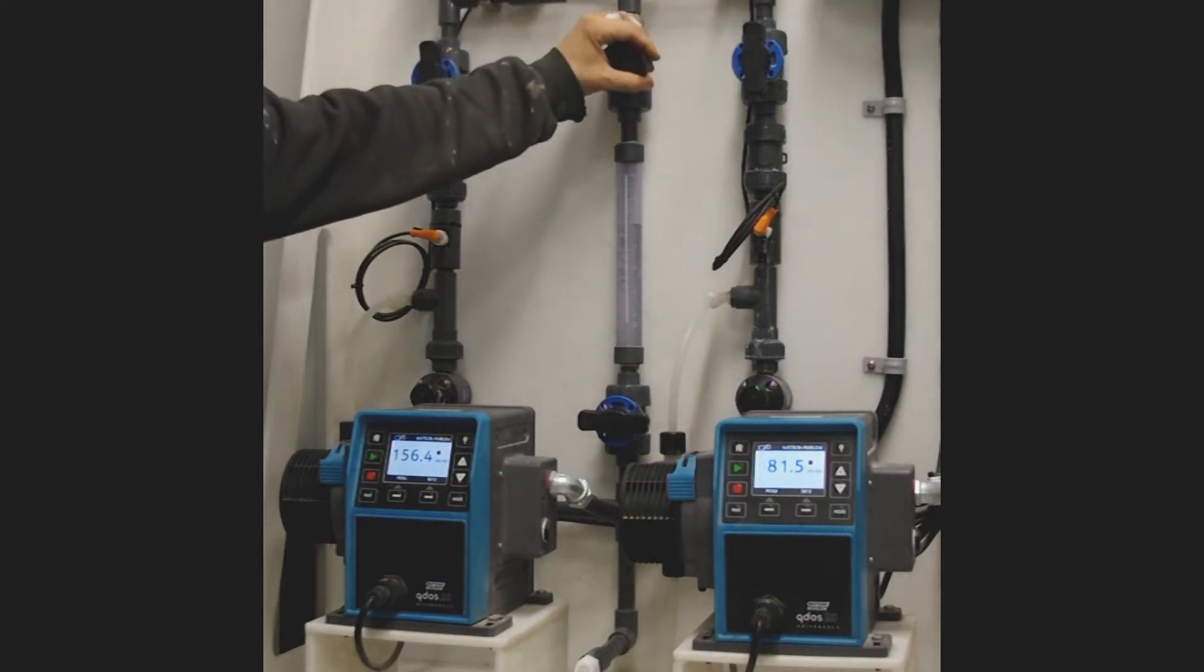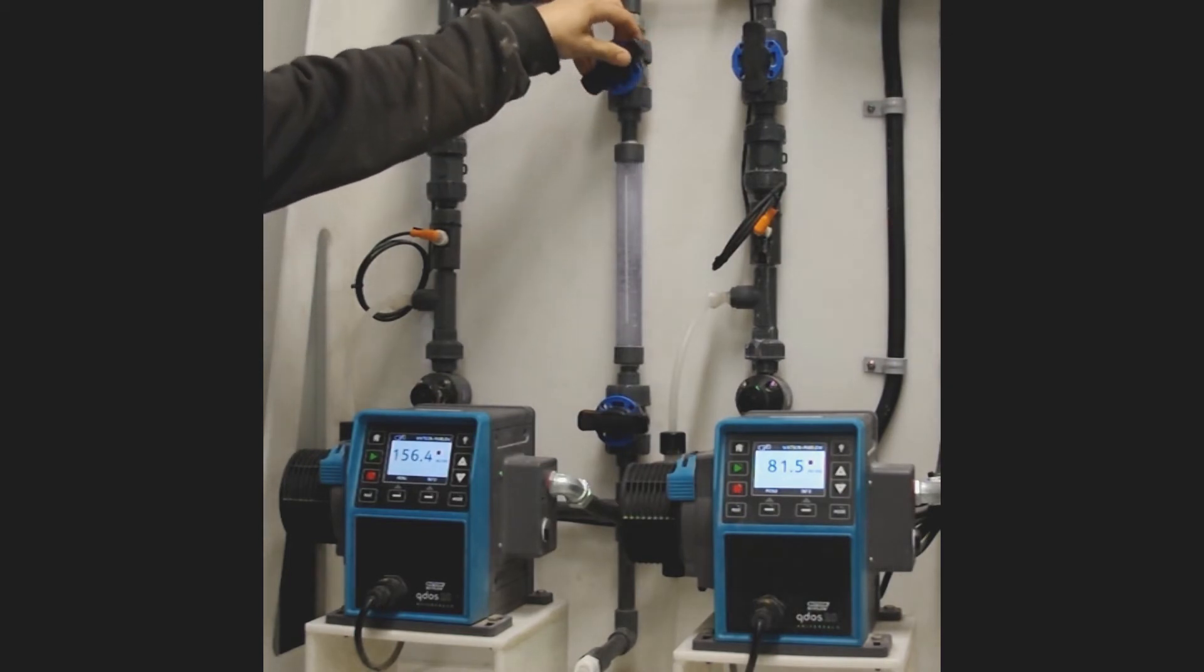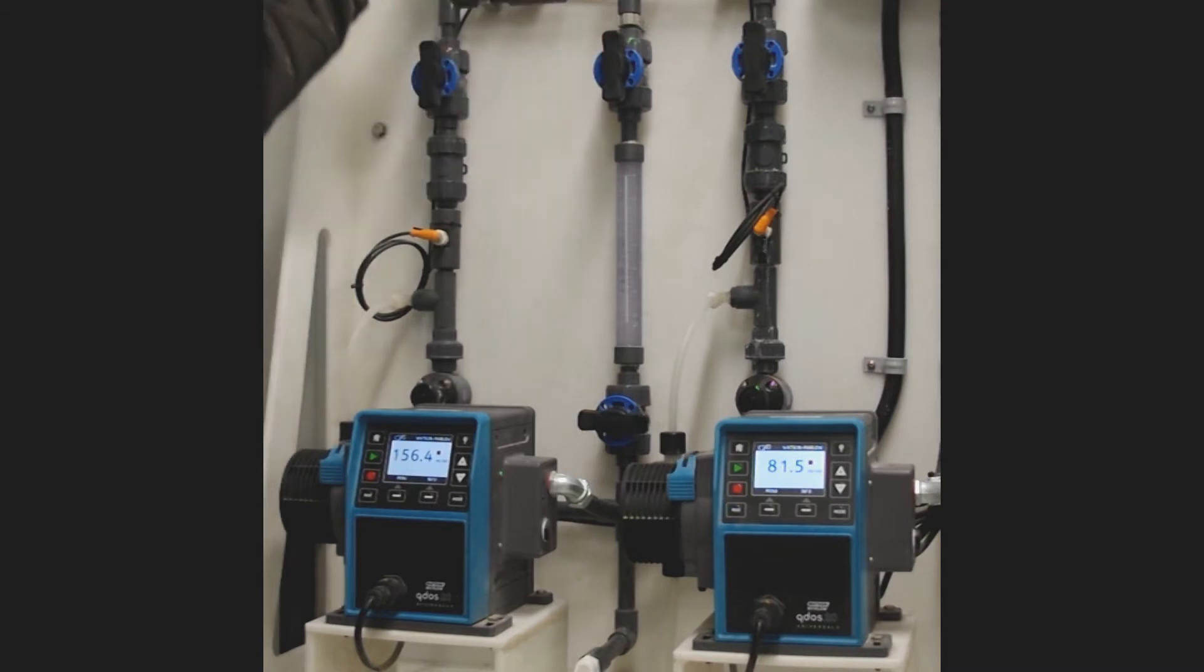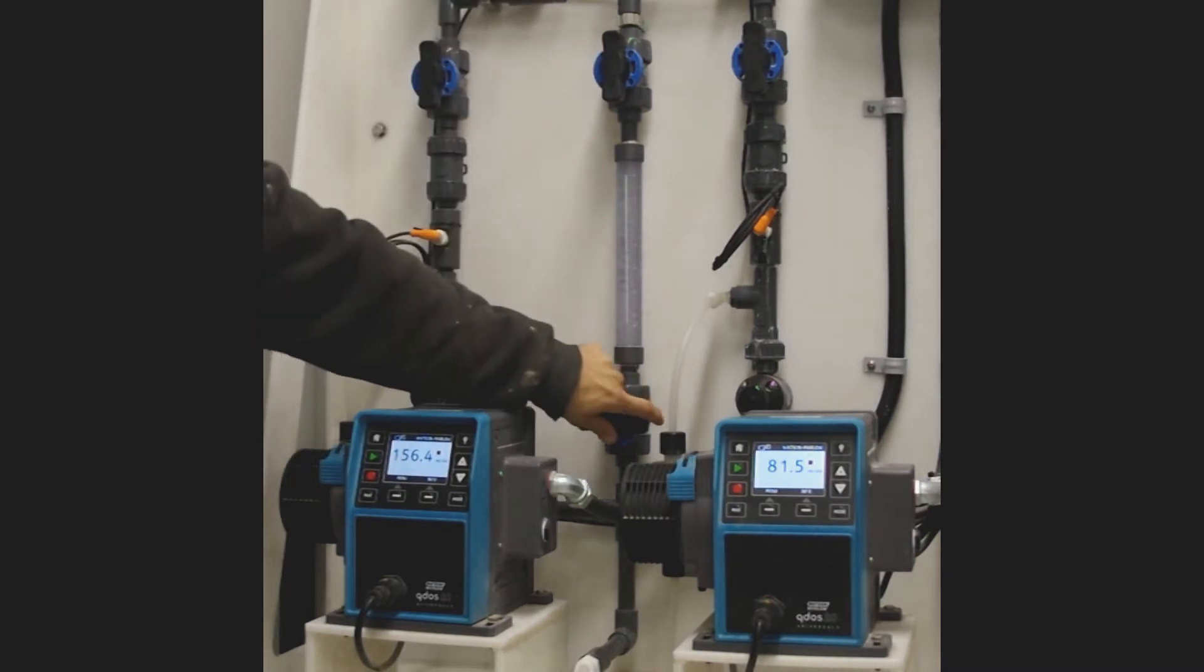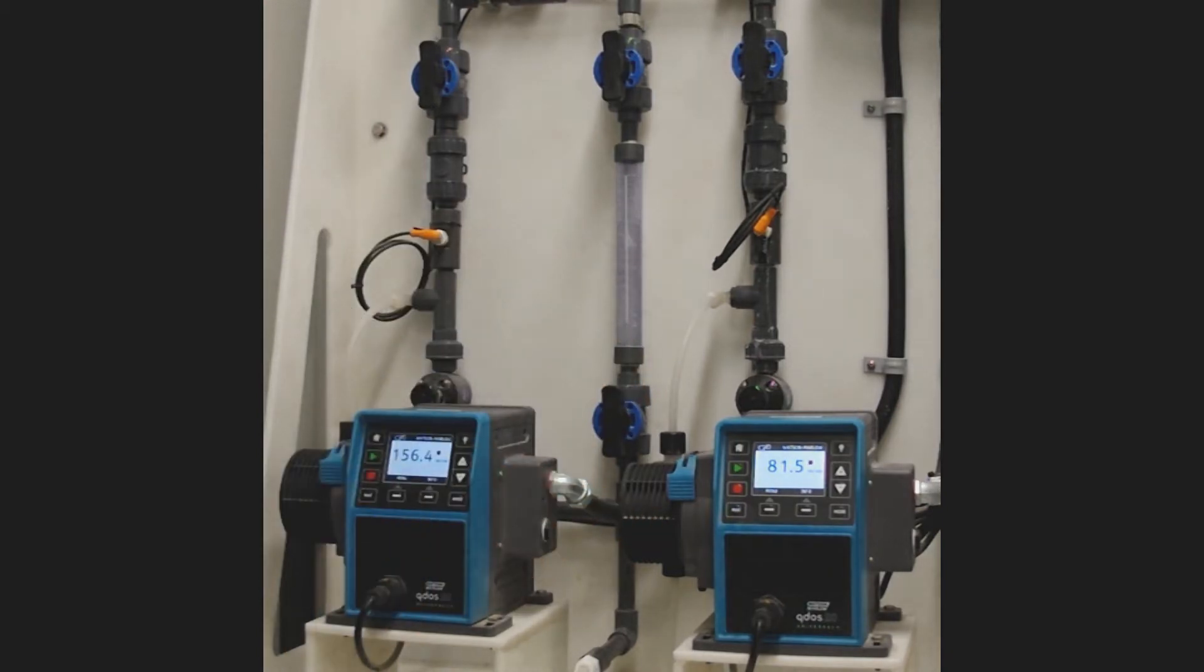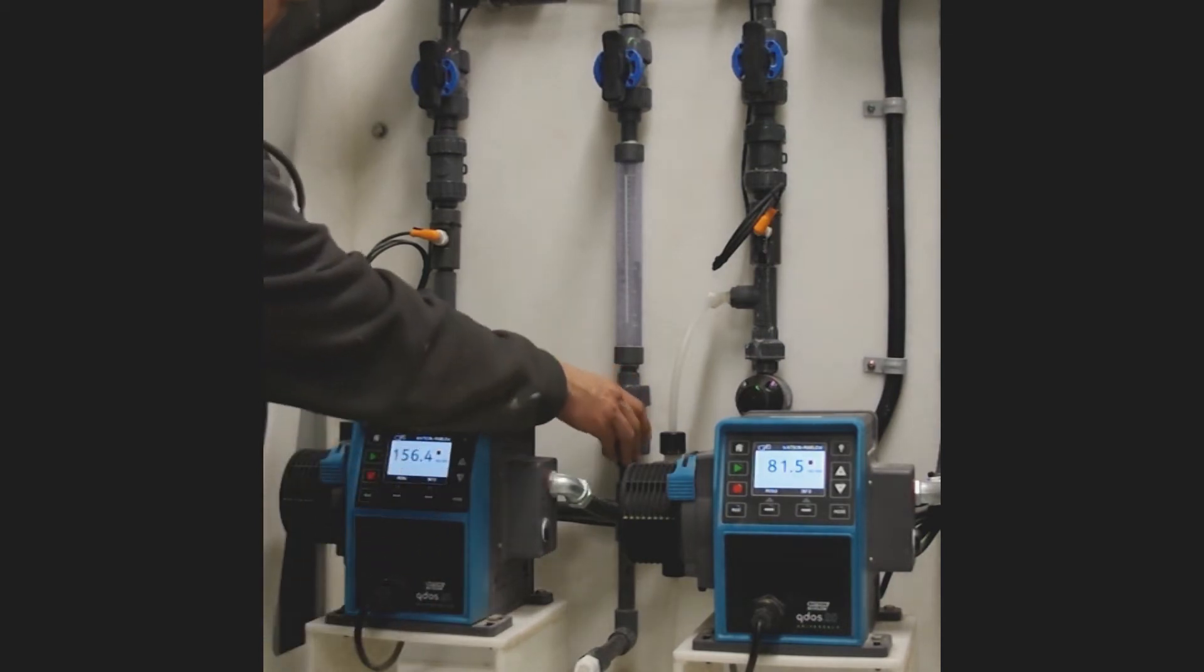Second thing that you're going to do is open the sight glass gauge. You can see that because this is a pressurized system, it's actually wanting to fill up this sight glass quite quickly. So the first thing that you do is you let off the pressure at the bottom. That's going to allow this to drain back to the tank, and then you can open up the air relief at the top.